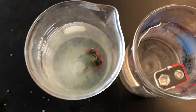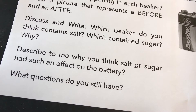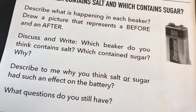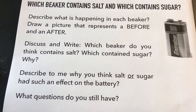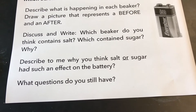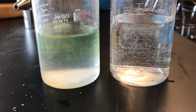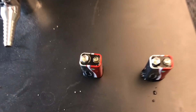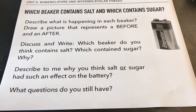What I'm going to do is take them out and we'll answer a couple more questions. So again, which beaker do you think contains the salt and which contains the sugar? Describe to me why you think sugar or salt had an effect on the battery. I took them out and you can clearly see the one on the left is now yellow and the one on the right is not. If we take a look at the very top of the batteries, you can see a difference — this one's nice and shiny and this one is getting dull and brown. What other questions do you still have?